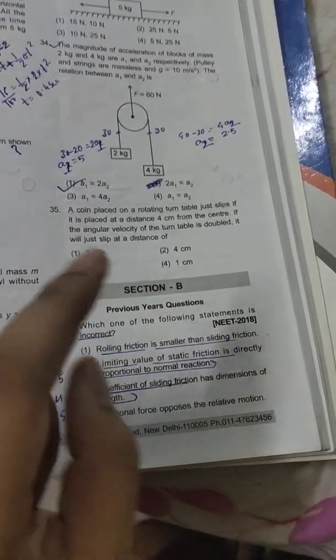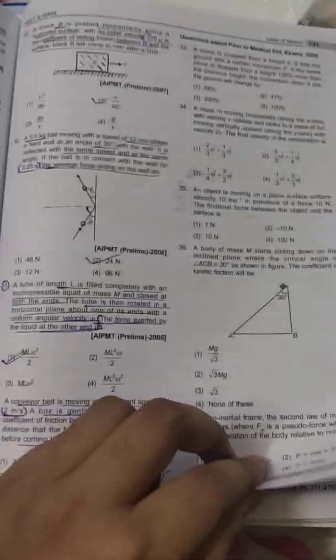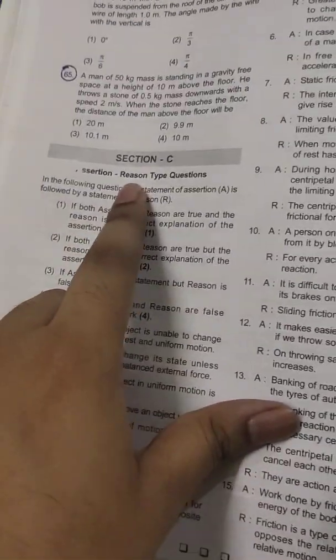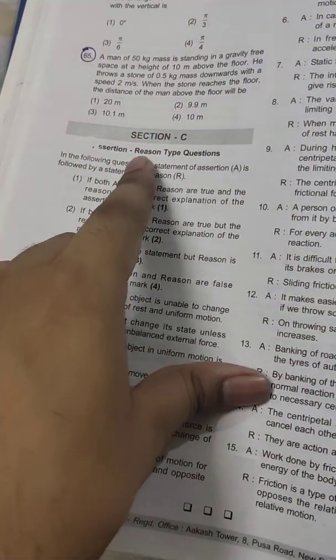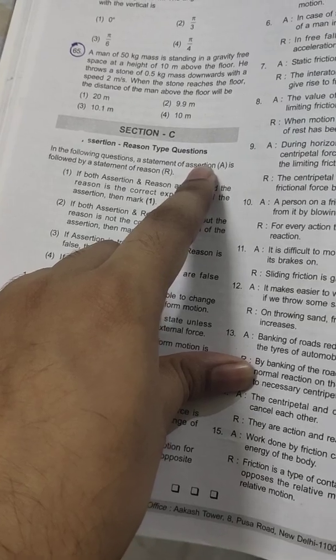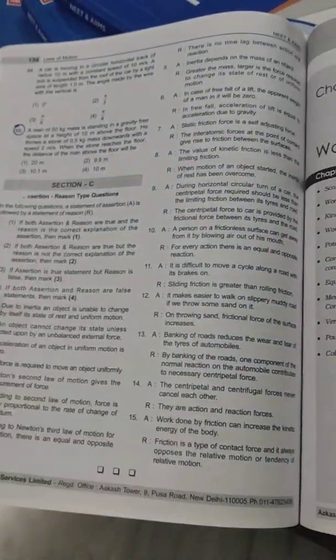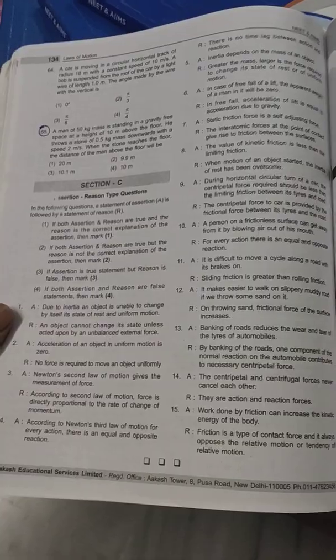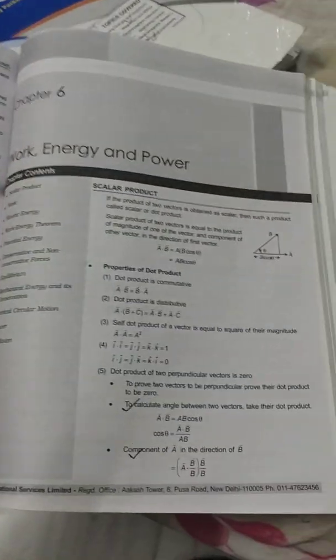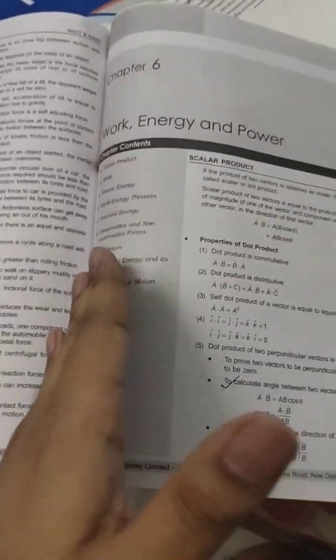After that, there is Section B which deals with previous year questions that were asked in NEET examination and AIPMT examinations. Section C is assertion and reason type questions, very thought-provoking. The rest of the chapters are just like this: first theory, examples, exercises, and assignment sections A, B, and C.